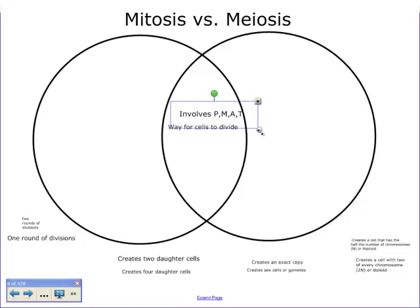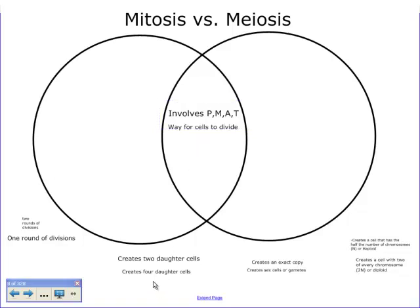The other thing they both involve is the same four key words: prophase, metaphase, anaphase, and telophase. While each individual phase may be slightly different, they are similar in that prophase is where the nucleus dissolves, metaphase is where the chromatids line up at the center, anaphase is where something is pulled apart, and telophase is where you have the two new nuclei.